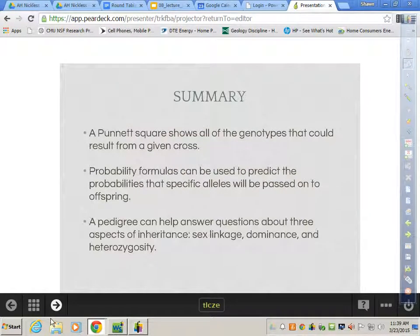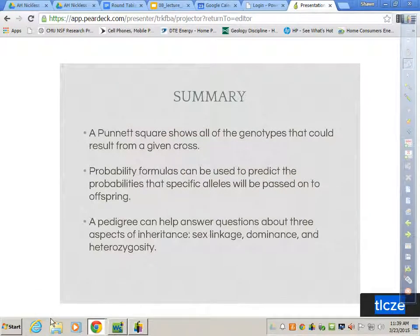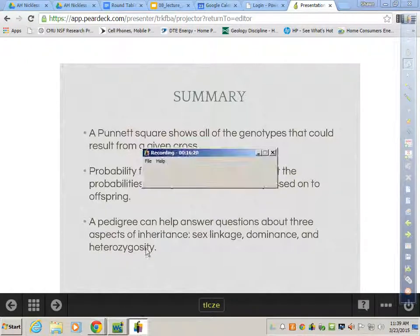A Punnett square shows all the genotypes that can result from a given cross. Probability can be used to predict that specific alleles will be passed on to offspring. And a pedigree can help answer questions about three aspects of inheritance, like sex linkage, dominance, and heterozygosity. They do use those pedigrees in hospitals when they're trying to figure out what the risk is of an individual having a disease or a disorder and things of that nature.